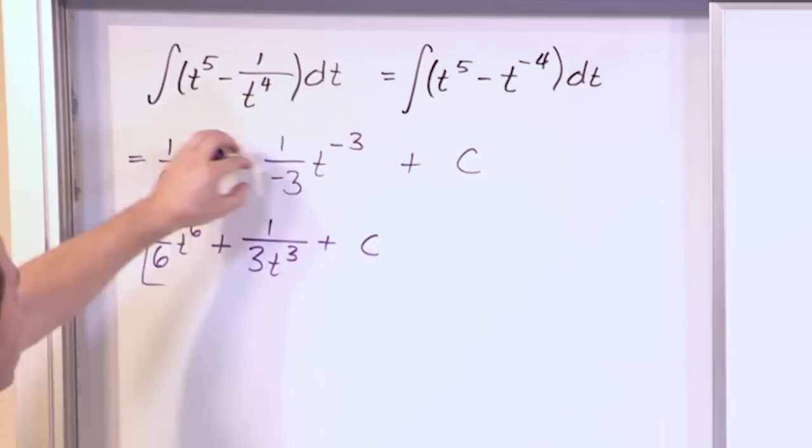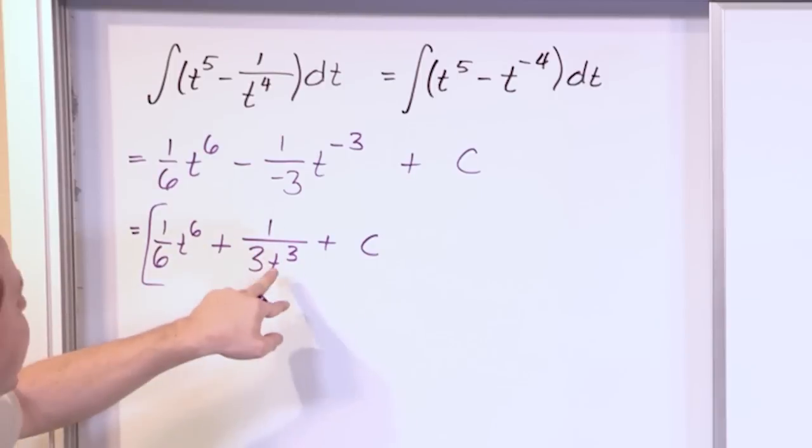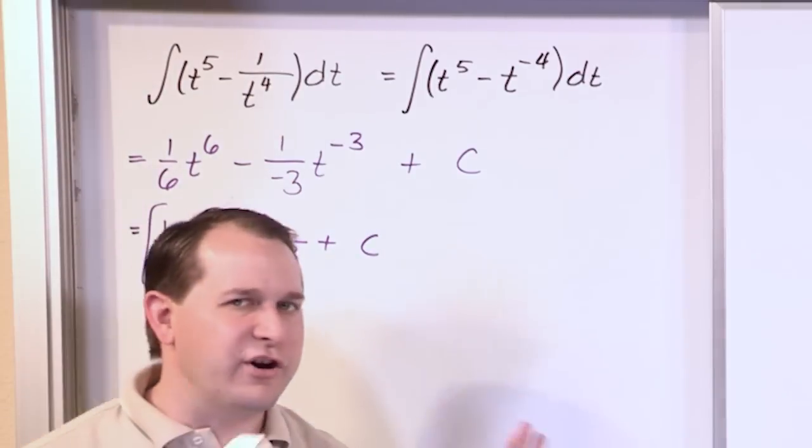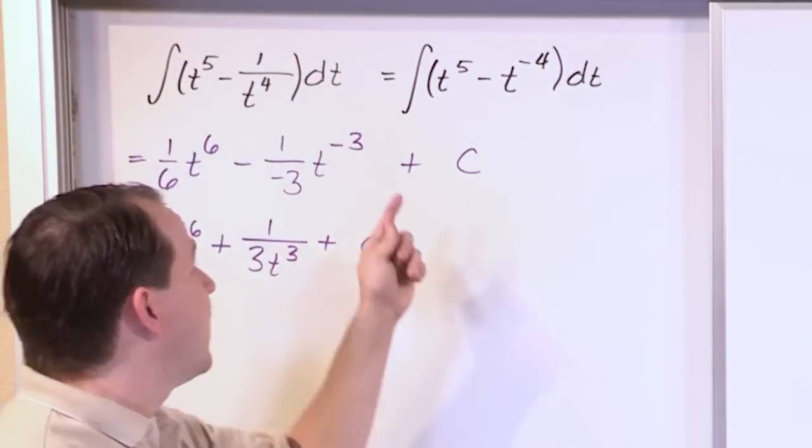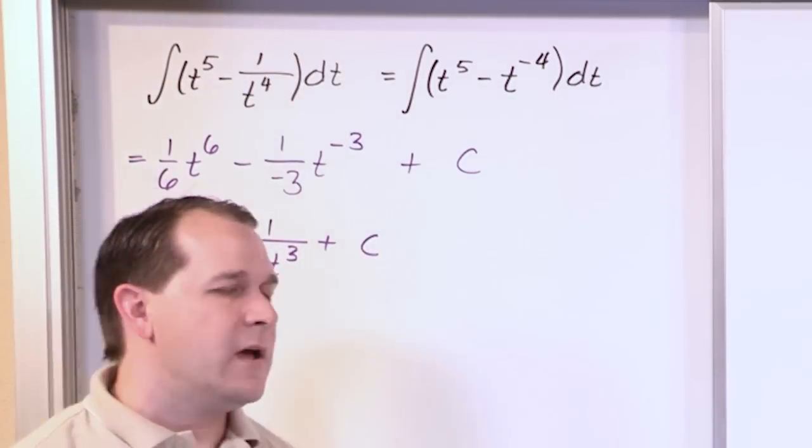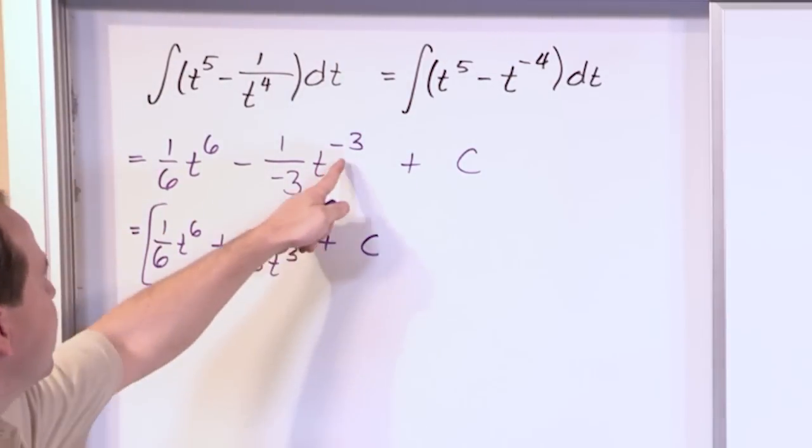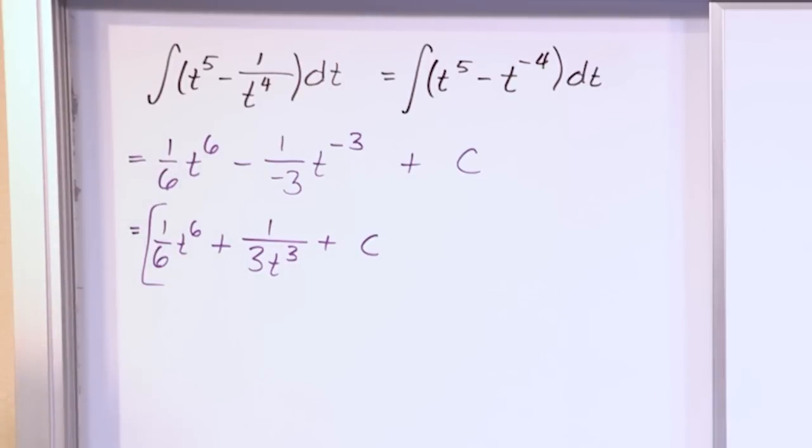I mean, really, this is the answer. This is all correct. It's just how you choose to represent it. I could have left this as 1 third t to the negative 3 power. That's totally fine. I can leave t to the negative 3 power. But since the original problem was given to me in terms of a fraction, I choose to be nice and return the answer in terms of a fraction also. So I'll just move this and make it a positive, but really, it's the same thing either way. And so the answer you get is 1 sixth t to the 6th power plus 1 over 3t cubed plus a constant.